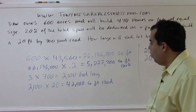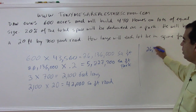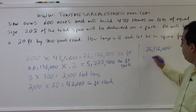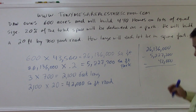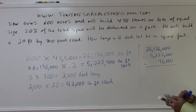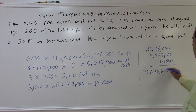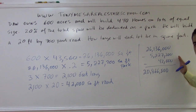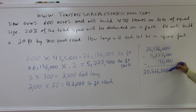Now we have our total square footage, the park, and the road. So: 26,136,000 (total) minus 5,227,200 (park) minus 42,000 (road) equals 20,866,800 square feet. That is the usable square footage — the space actually available to build homes.